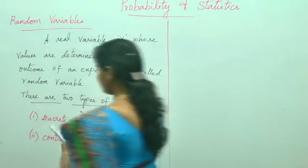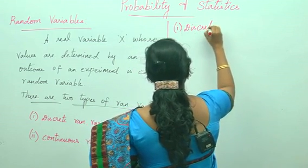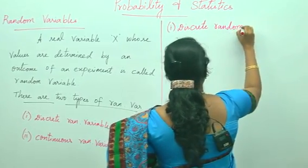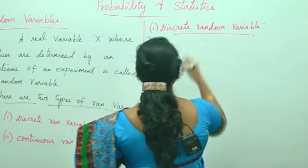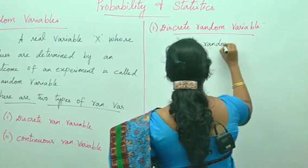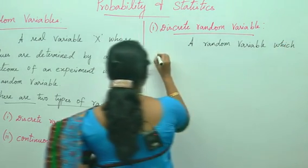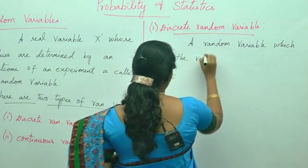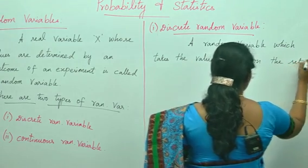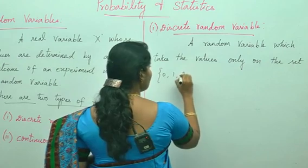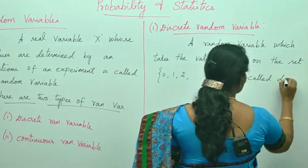Discrete random variable: a random variable which takes values only on the set 0, 1, 2, and so on till n is called a discrete random variable.